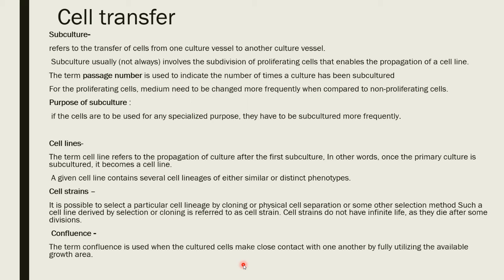Subculture usually involves the subdivision of proliferating cells that enables the propagation of a cell line. The term passage number is used to indicate the number of times a culture has been subcultured. For proliferating cells, the medium needs to be changed more frequently, as proliferating cells consume the medium faster than others, so they require subculturing more frequently.